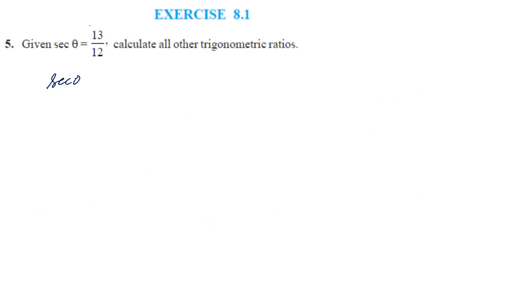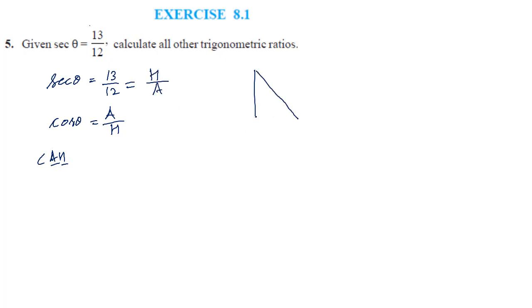Question 5: sec θ is given as 13 by 12. Cos θ is adjacent divided by hypotenuse, so sec θ (its reciprocal) is hypotenuse divided by adjacent — hypotenuse is 13, adjacent side is 12. Recalling the 5-12-13 triplet, the opposite side comes out as 5.